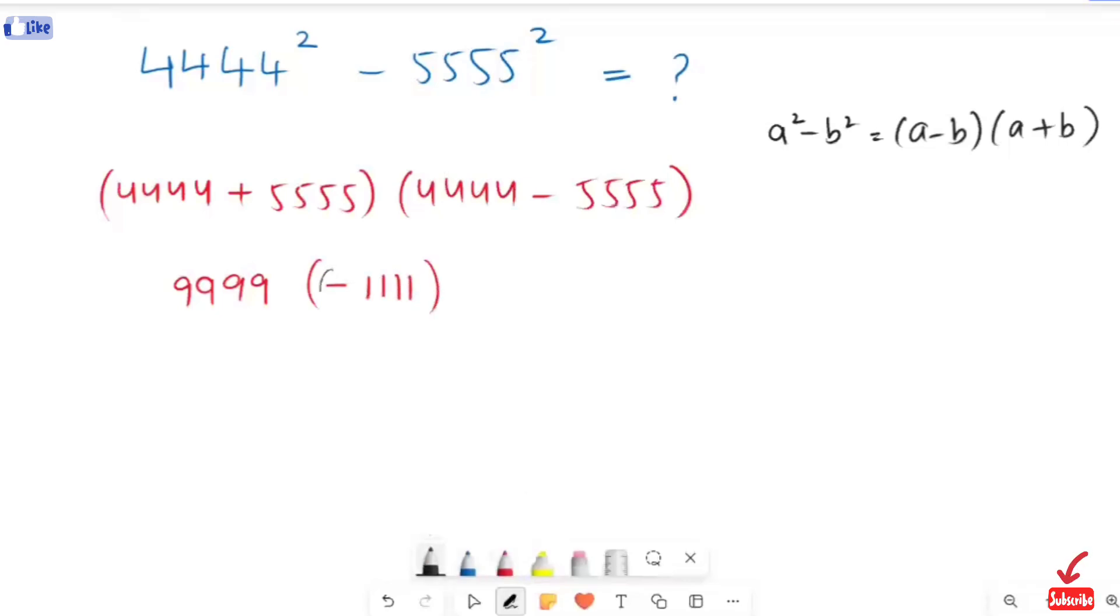Now here, I'm going to take this negative sign out, so the next expression I will get is negative. Now I will take this out, and in replacement of this, I'm going to write 10,000 minus 1111, so I will get the same: 9999 times 1111.